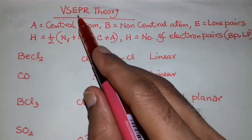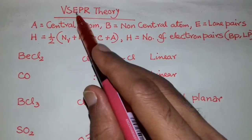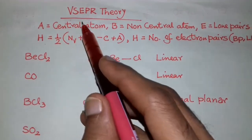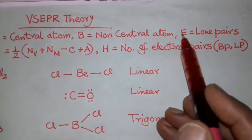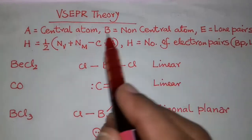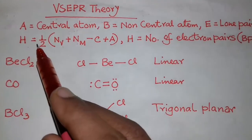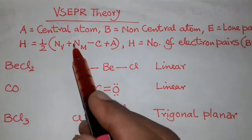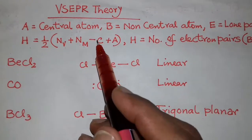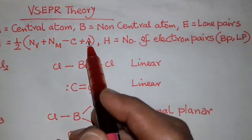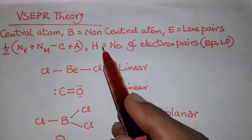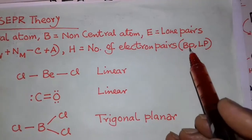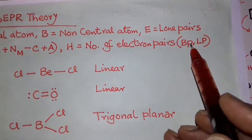Today we have discussed VSEPR theory — Valence Shell Electron Pair Repulsion theory — in which A is the central atom, B is the non-central atom, and E is the lone pair. First we have to calculate the H value: H equals half of (Nv — valence electrons on the central atom — plus Nm, non-central monovalent atoms — minus C plus A), where C is for cationic charge and A is for anionic charge. H is called the steric number, also known as the number of electron pairs, which consists of bond pairs and lone pairs.